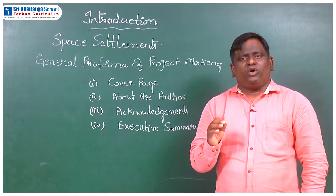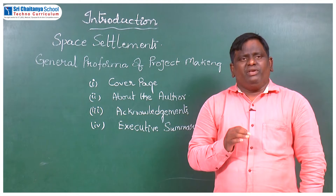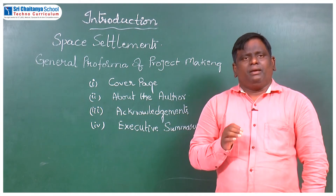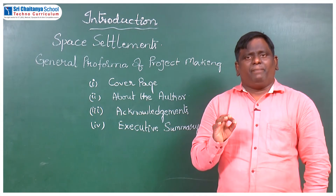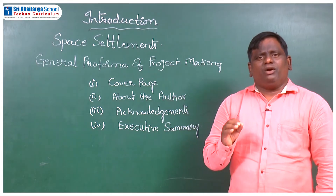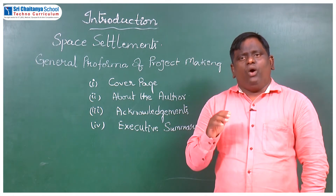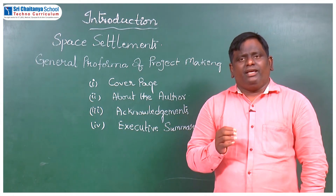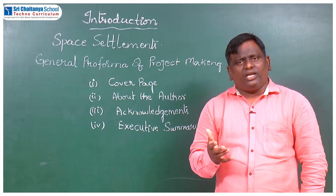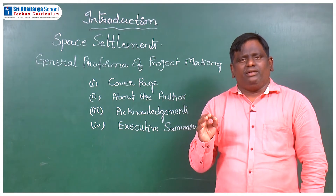This arrangement of project making is called the pro forma of project making. In the pro forma, we will generally start with four major parts. The first part is the cover page, which consists of the outer design and structure of the space colony, space hotel, or asteroid mining machine.